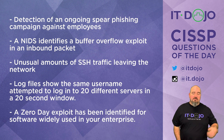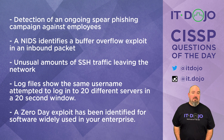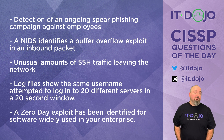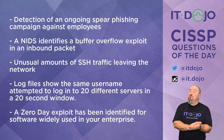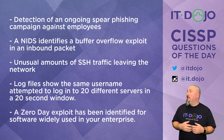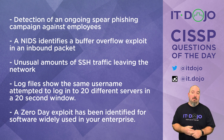Answer choice number one says detection of an ongoing spear phishing campaign against employees. That is very much an indication of attack — it appears that an attack is going on right now, and detecting an active spear phishing campaign fits that description. Answer choice number two says that you have a network-based intrusion detection system that identifies a buffer overflow exploit on a packet coming inbound to your network. That is also an indication of attack.